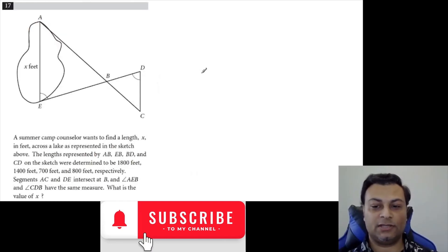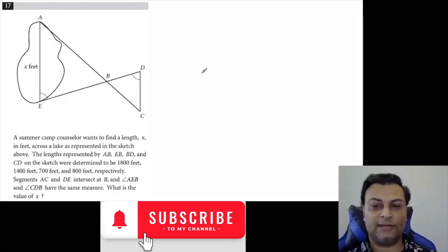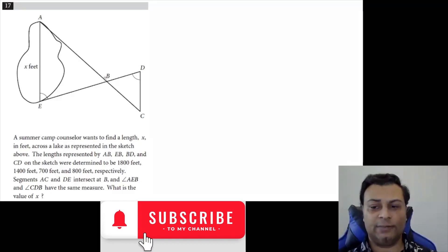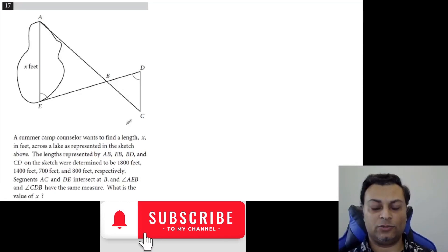Question 17 says a summer camp council wants to find a length X, this part here from A to E, in feet across the lake as represented in the sketch above. The lengths represented by AB, EB, BD, and CD were determined to be all these numbers. Let's fill those in.